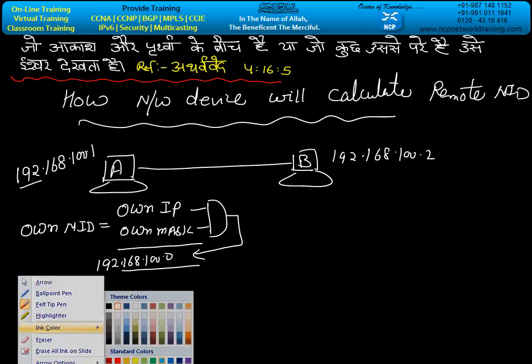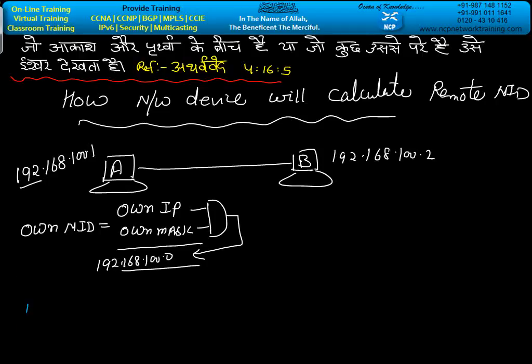Whenever the administrator sends a request - whether ping request, telnet request, web page request, any request to B at 192.168.100.2 - let's say the administrator is sending an echo request.